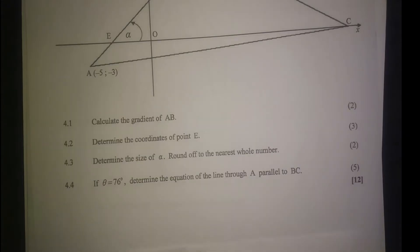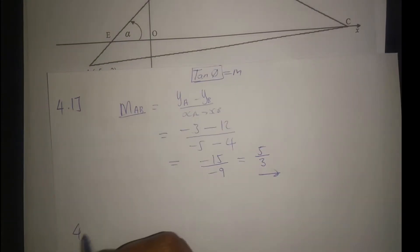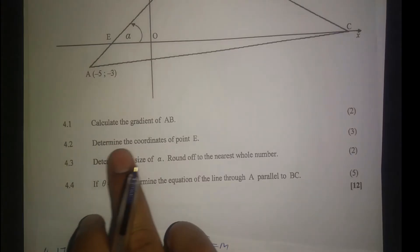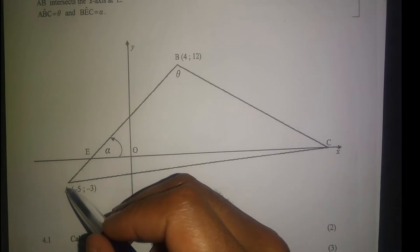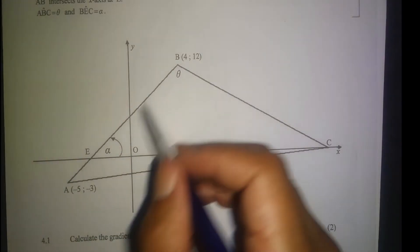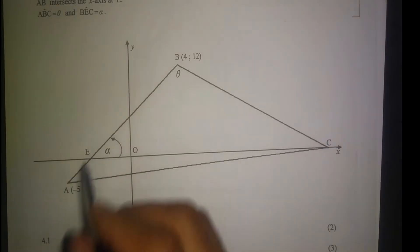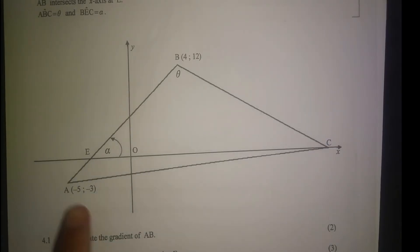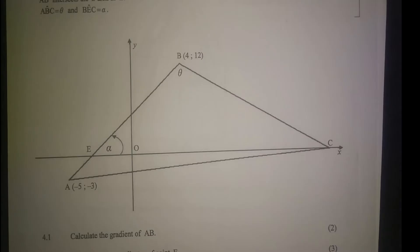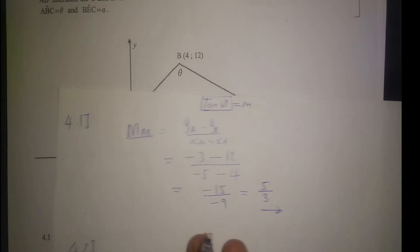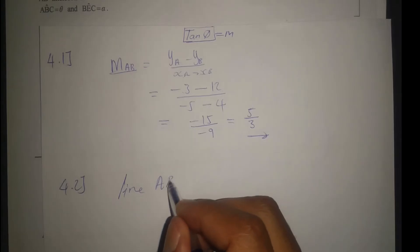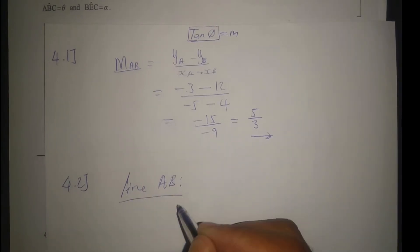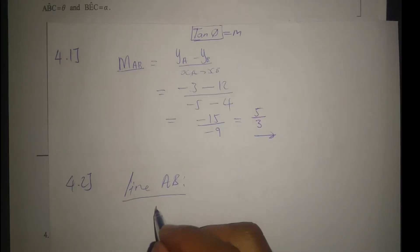4.2: Determine the coordinates of E. So therefore we need to find the equation of AB. Then after finding the equation of AB, we can calculate the coordinates of E.